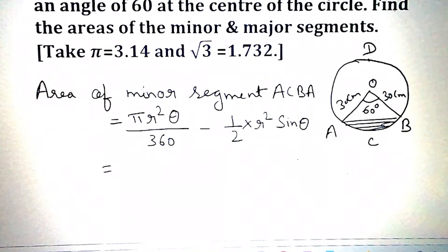Value of pi is 3.14 into 30 into 30 into 60 divided by 360 minus half into 30 into 30 sine 60 degree.